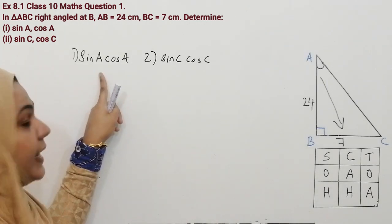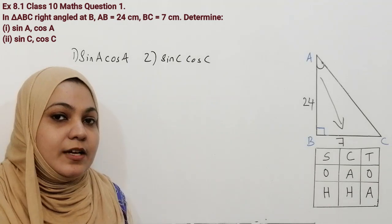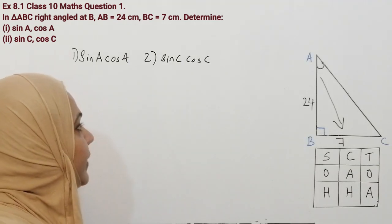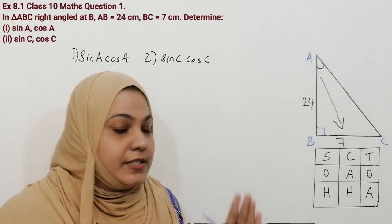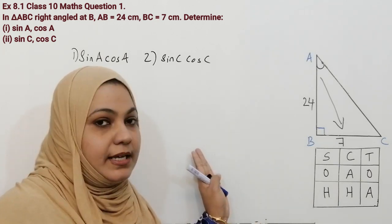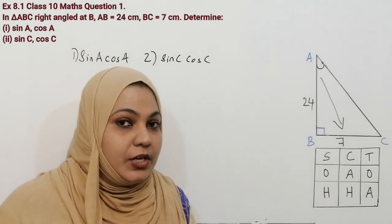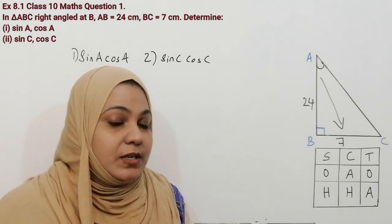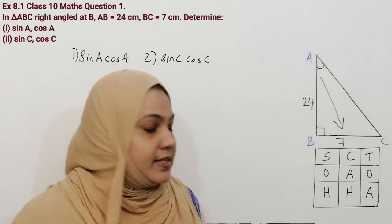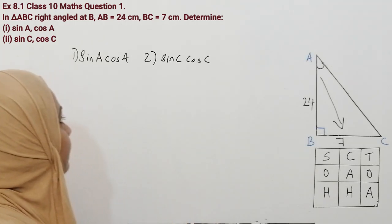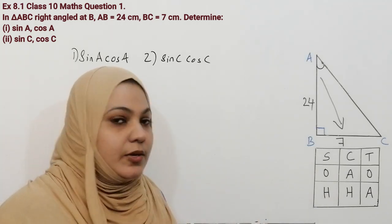The first part of this question is sin A, cos A, and the second part is sin C, cos C. If you are new to my channel, please watch my previous videos — then only it will be really easy for you. I will give the link in my description box. We have learnt two tricks for solving trigonometric ratios.